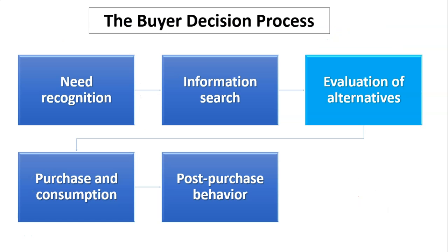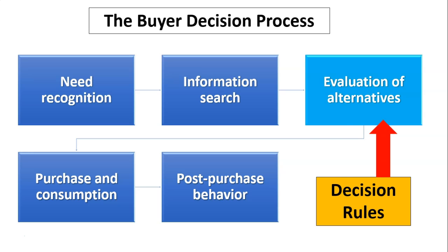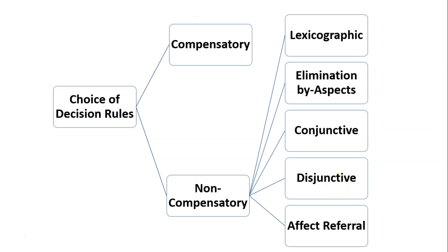To work out where this fits in — you've probably seen this before — this is the buyer decision process where the consumer recognizes they have a need for a product, they gather some information either internally or externally, and then once they have all this information, before they make their purchase, they have to choose between the various alternatives. They use what's called the decision rule, and there are variations of decision rules: a compensatory model or a non-compensatory decision rule, and that's where lexicographic fits in.